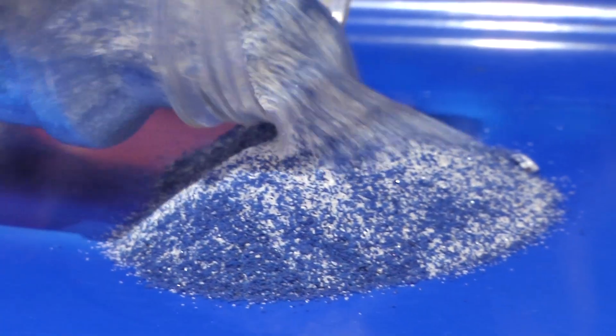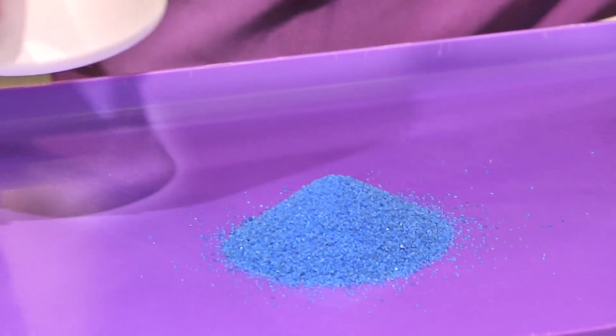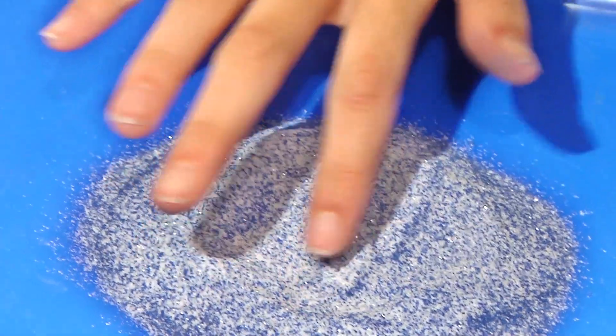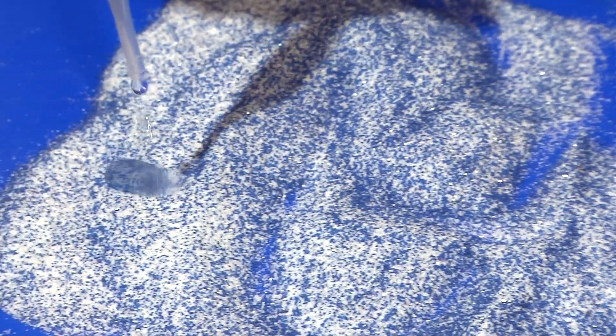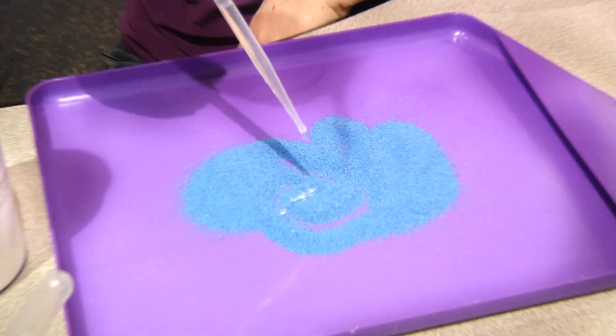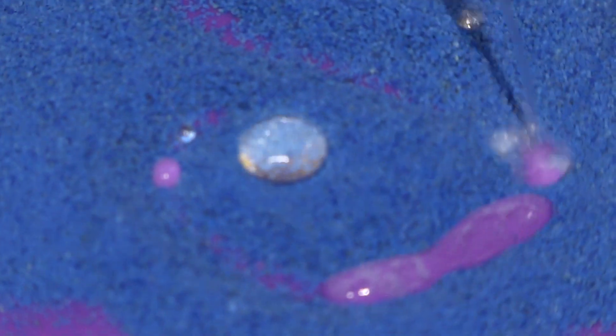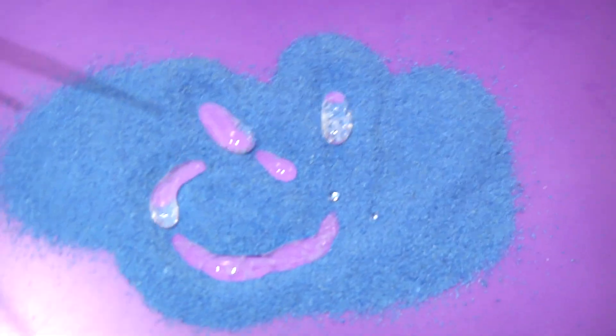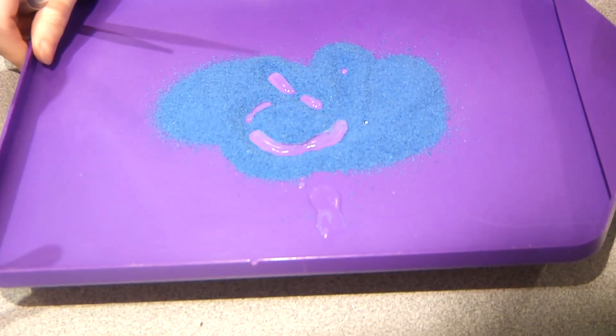First, pour the normal sand and the magic sand onto separate trays. Next, trace patterns into the sand. Finally, drop some water onto the two sands and watch what happens. The water gets absorbed into the normal sand. But the water sits in big drops on the magic sand. Cool! We can even tilt the tray and make the water follow the patterns in the sand.